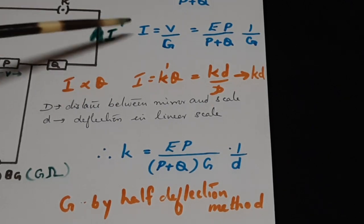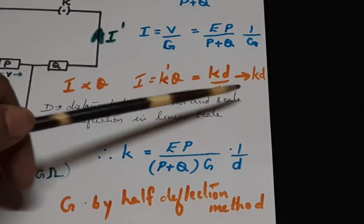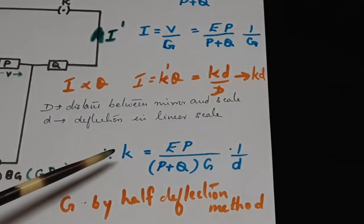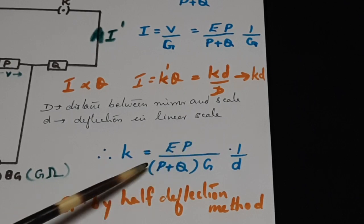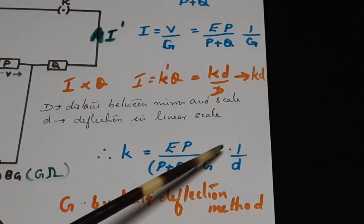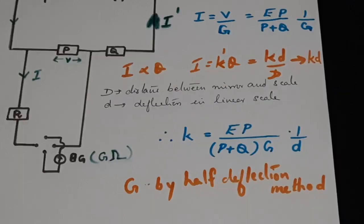Equating the two expressions for I, we can rearrange to get K as E P by P plus Q into G into 1 by D. Here, G stands for the resistance of this galvanometer.